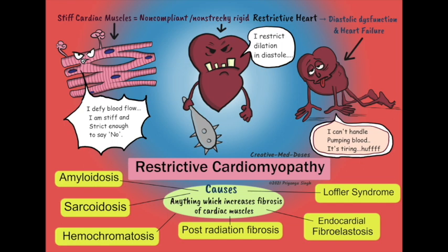Chest radiograph shows normal ventricular chamber size, enlarged atria, and possible pulmonary congestion. EKG shows low voltage QRS and arrhythmias. BNP is increased. Endomyocardial biopsy is the definitive diagnosis, though not often used. Amyloidosis is associated with apple-green birefringence with Congo red staining.